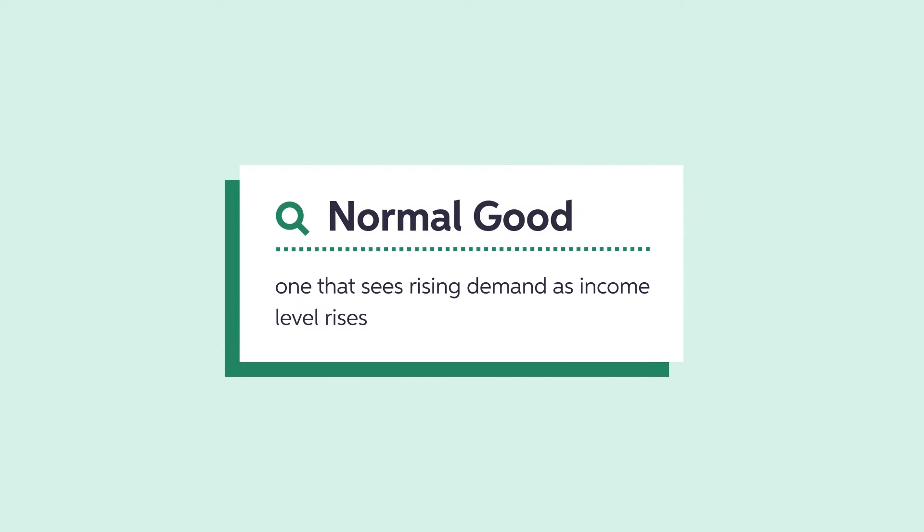The second demand determinant is income. Your demand for, say, leisure travel may decrease significantly if you lose your job. A lower income decreases one's purchasing power, which can lead to a lower demand. A good that fits this description is referred to as a normal good.